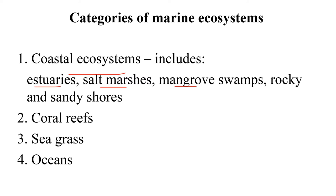Then you find the rocky shore and the sandy shore of the coastal ecosystem. Then the coral reef ecosystem, which is one of the most productive ecosystems on planet Earth. Other ecosystems like mangrove and estuary are also very productive. Seagrass ecosystem is also a productive ecosystem. But the ocean ecosystem — the open ocean — is one of the less productive ecosystems on the planet.